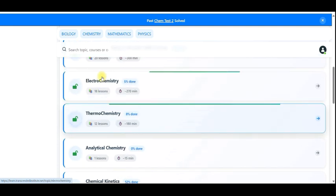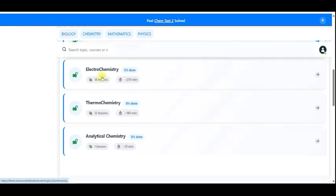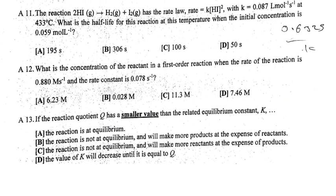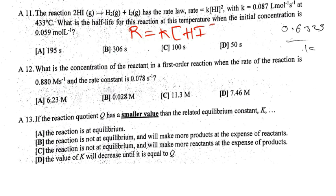Okay, so we've got the reaction where the rate law is given as r equals k times HI squared. So already just by looking at the rate law you can tell that this is a second order reaction. So now the question is, what is the half-life?